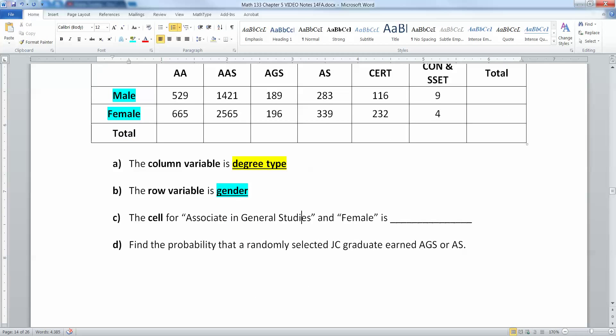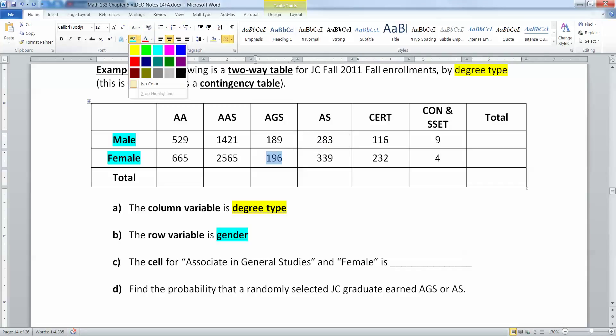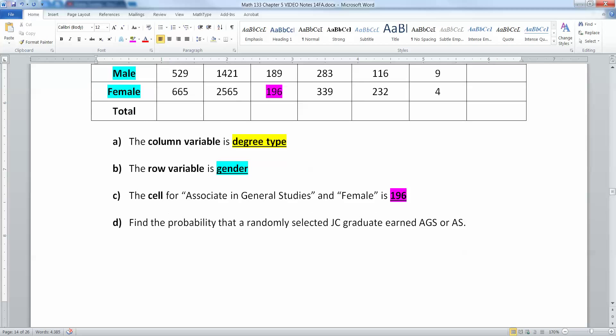The cell for associate in general studies and female, AGS and female, that's 196. That's right here. I'll put it in pink, so that's 196 just so you can see it.